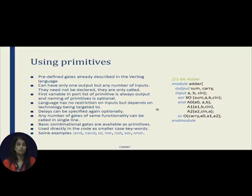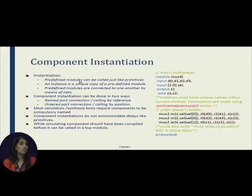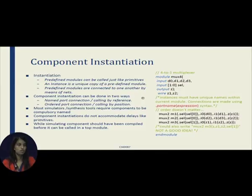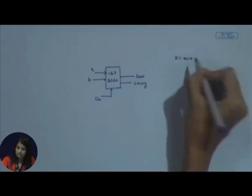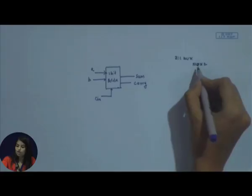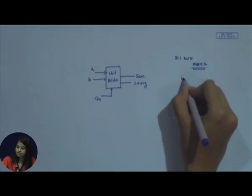We now know how to use a primitive in structural modeling and what are its advantages and disadvantages. Now we will see what component instantiation is. Instantiation is nothing but using a predefined module inside a top module or another module. For example, earlier I spoke about a 2-to-1 mux — we defined that 2-to-1 mux with the keyword mux2. We will see how we use mux2 to create a 4-to-1 mux.